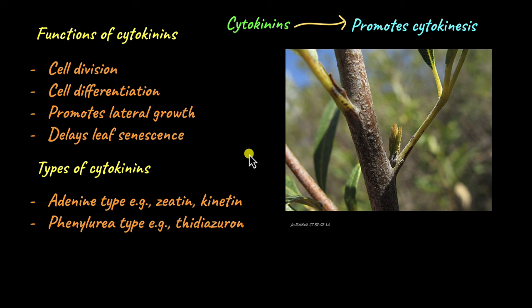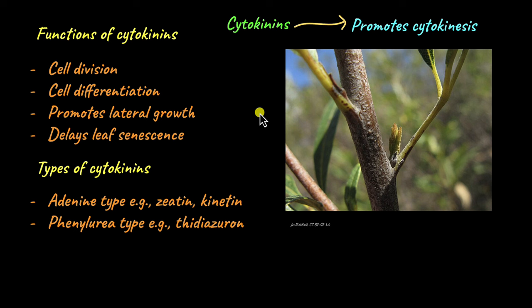So far, whatever plant growth regulators we have seen have a variety of uses in the agriculture and horticulture industry. The synthetic versions of plant growth regulators, or PGRs, are often sprayed on young plants to increase their growth and make them grow faster. Some examples include spraying sugarcane with gibberellins to increase the length of sugarcane.